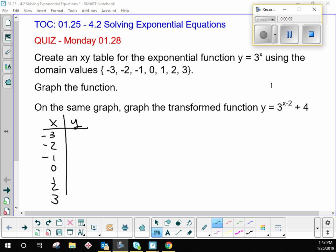If you're putting negative 3 in for x to get your y, you're going to have 3 to the negative 3. Please remember, negative exponents mean you flip the base and you make the exponent positive. So this becomes 1 over 3 to the 3, which is 1 over 27.